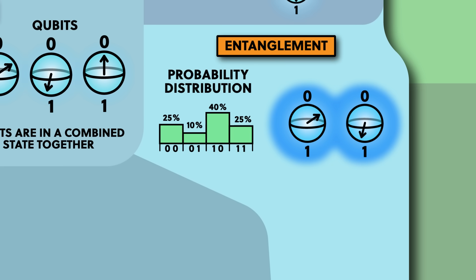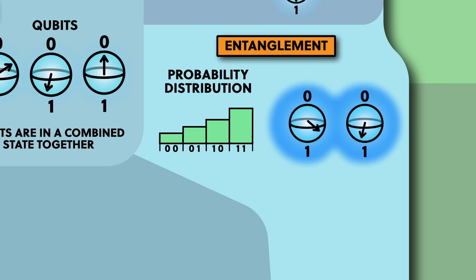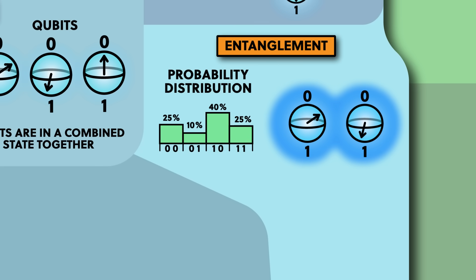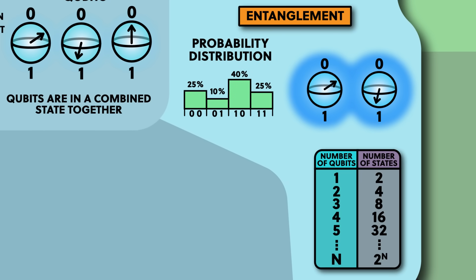The important point here is because the qubits are entangled, if you change the direction of the arrow on one qubit, it changes the probability distribution for the whole system. So the qubits are no longer independent of each other — they are all part of the same large state, and this is true no matter how many qubits you have. For one qubit you've got a probability distribution over two states; for two qubits, four states; for three qubits, eight states. This keeps on doubling each time you add another qubit. In general, a quantum computer of n qubits can be in a combination of 2 to the power of n states.